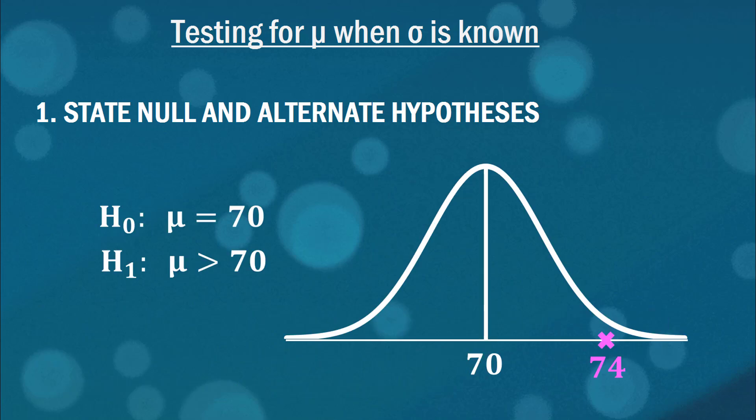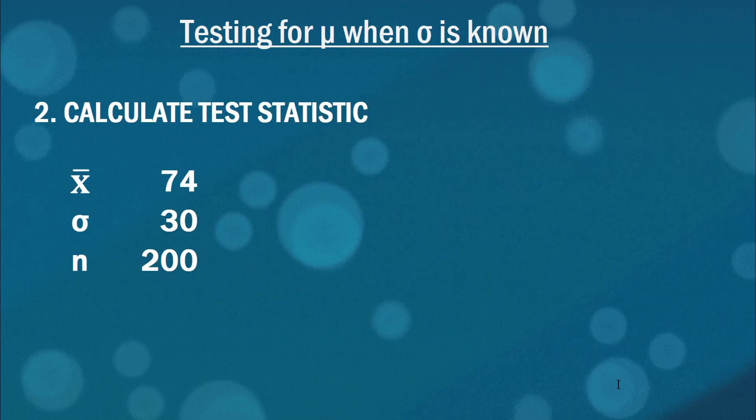So really what's happening here is that under the assumption the null hypothesis is true, there's going to be some distribution about the possible sample mean values. So there's a distribution with a mean of 70, and we actually have a sample mean of 74. So really the question we're going to be answering is how extreme is that 74 value? Is that value so extreme that we'll cast doubt on our null hypothesis? Well that's what a hypothesis test effectively does, and in our next step when we calculate the test statistic, we'll be quantifying how extreme our sample is. But first let's just write down the information that we have. There's X bar, which is our sample mean at 74, the population standard deviation is 30, and we have 200 observations in our sample.